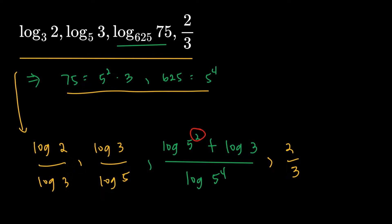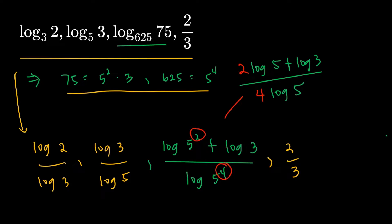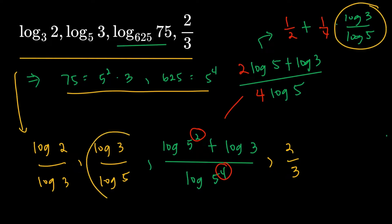Now there's an additional thing we can do. The exponent can be moved to the front, so the third term becomes 2 log 5 plus log 3, all divided by 4 log 5. I can split this fraction into two parts: one-half plus one-fourth times log 3 divided by log 5. This is nice because the second and third terms now share a common factor of log 3 divided by log 5, so that's my first agenda — comparing those two.